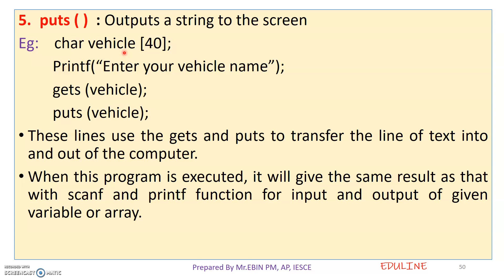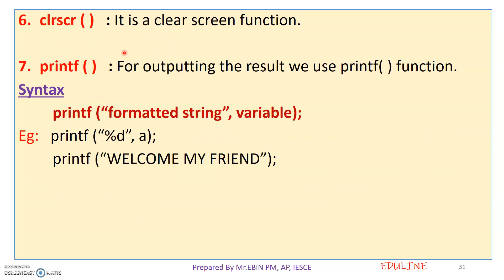So this is gets and puts — we can use the array. You can use gets and puts as two functions. If we use the string, we can save and use it. Next is clrscr, which is the clear screen function — it clears the screen output.